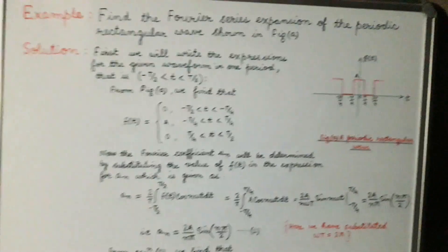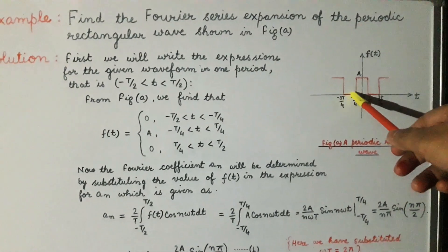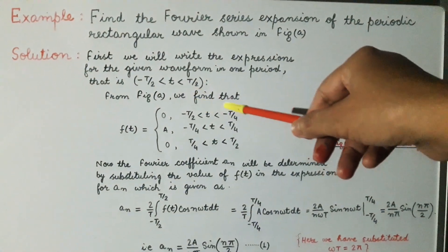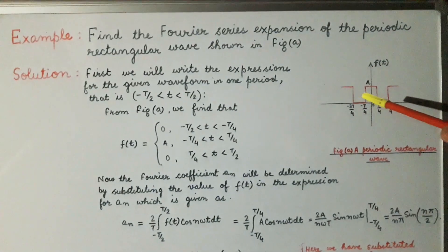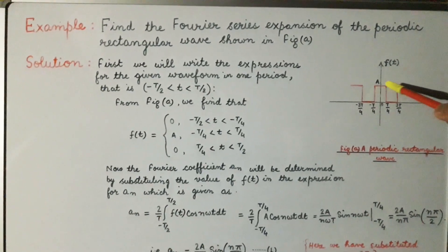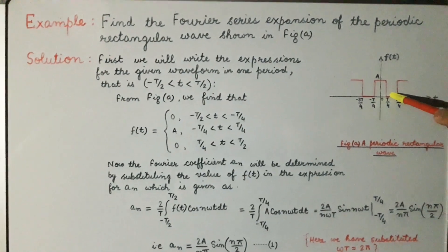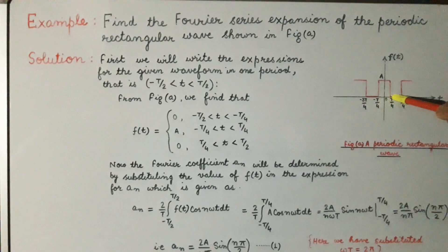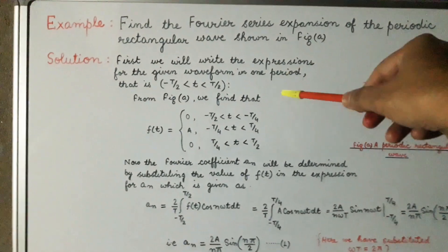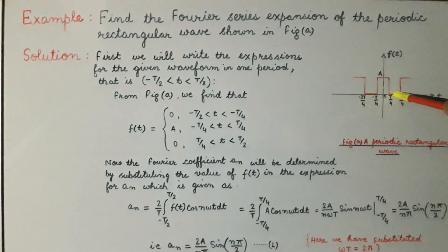From figure a, we find that the value of f(t) is zero from −T/2 to −T/4. The value of f(t) is A from −T/4 to +T/4. And again the value of f(t) is zero from T/4 to T/2. So we have written the value of the function f(t) for one period, from −T/2 to +T/2.